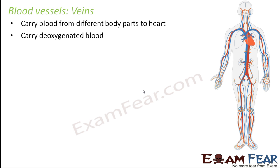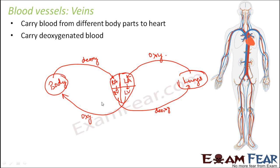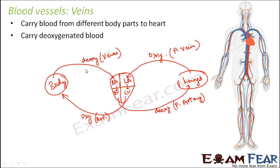Let us understand this using the same diagram. Based on what we studied about arteries, oxygenated blood is carried by arteries, and deoxygenated blood to the lungs is carried by the pulmonary artery. Veins generally carry deoxygenated blood from different body parts to the heart. However, in case of veins there is also an exception — the pulmonary vein — because it carries oxygenated blood. So normally veins carry deoxygenated blood, but the only exception is the pulmonary vein, which carries oxygenated blood from the lungs to the left auricle of the heart.